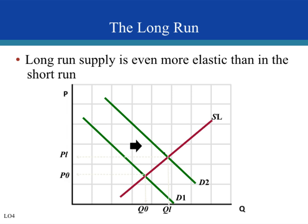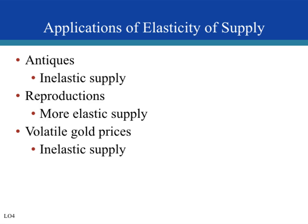Some applications: antiques are very inelastic — they cannot be reproduced. There is only a certain number of antiques in the world, so a change in price usually won't cause supply to increase significantly because they can't be produced. A change in price might cause someone to sell their antique at a higher price, but since antiques can't be reproduced, supply remains inelastic. A higher price doesn't necessarily increase the supply of antiques greatly.